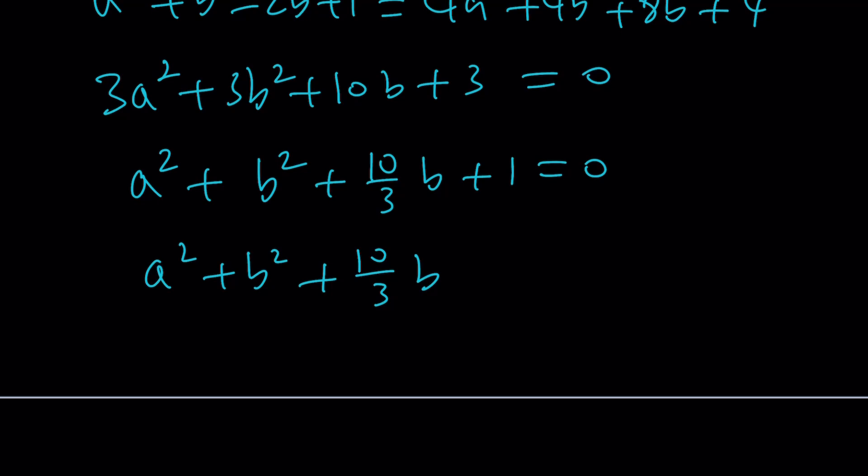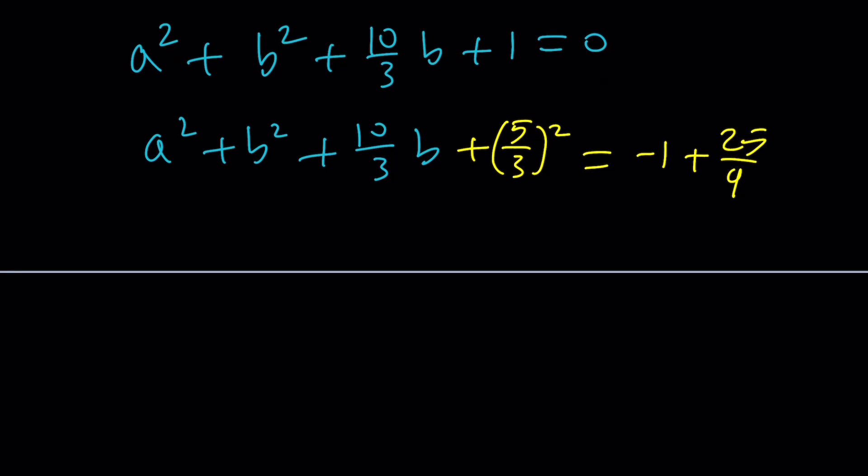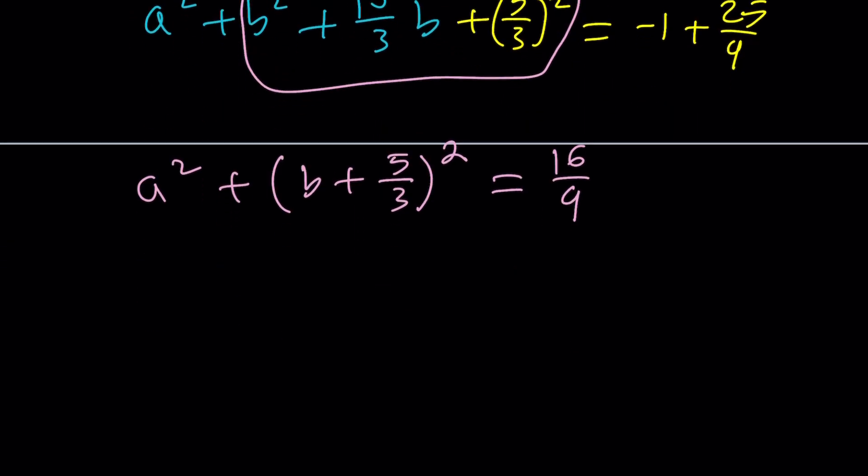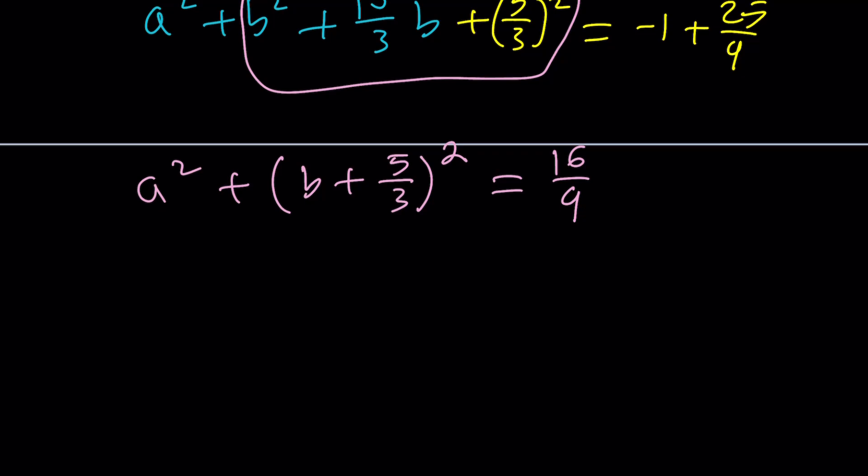But we're supposed to add five thirds squared to both sides, which is actually 25 ninths. Let me write it that way here. Now, this expression becomes the following. This part becomes a perfect square. And we can write it as a squared plus b plus five thirds square. So I don't really care about the value of five thirds squared. And this is going to be 16 ninths, which is nice because 16 nine is a perfect square. And this is perfect because we have a center at zero comma negative five thirds. That's the center. I don't know if you want to call it C or something else. And the radius would be four thirds.